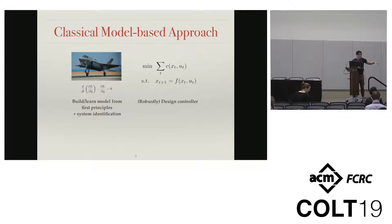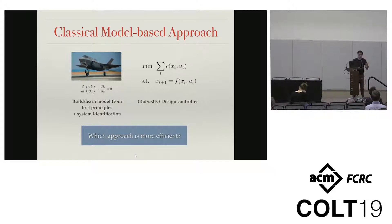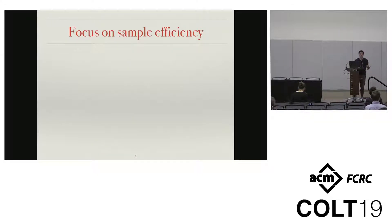Once we do that scrutiny, we take that model and really try to solve the optimal control problem. So we have these two competing lines of thought, and a very natural question to ask is: since they're both trying to solve the same problem, which one is more efficient? Efficiency can go along a lot of different axes, but since we're at COLT, we'll focus on sample efficiency.